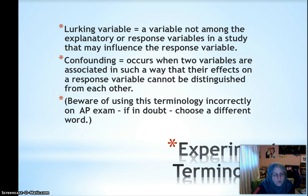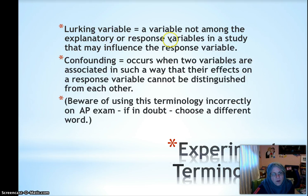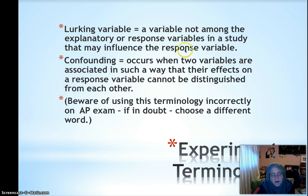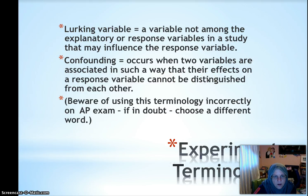There's lots of vocabulary you need to know for experiments. A lurking variable is a variable that's not among your X or Y variables that might influence the response. For example, if the explanatory variable is how much water you're giving tomato plants and the response is how many tomatoes they produce, sunlight could be a lurking variable you didn't control for that influences the result. Confounding occurs when two variables are associated in such a way that their effects on a response variable cannot be distinguished from each other.